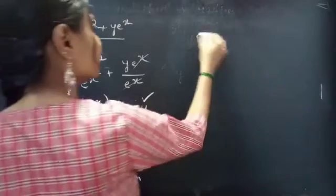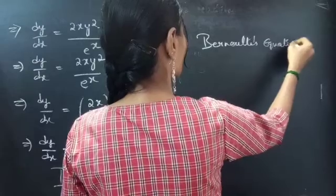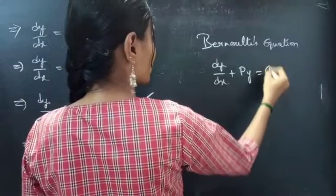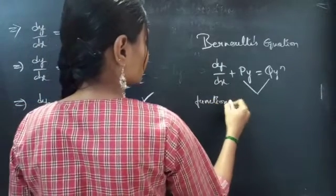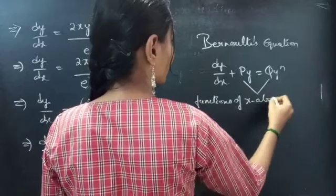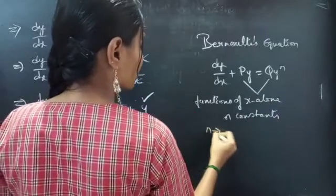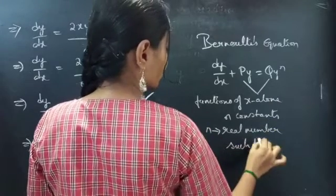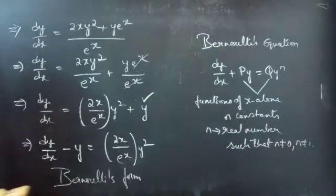We know that Bernoulli's equation is dy by dx plus P·y equals Q·y^n, where P and Q are either functions of x alone or constants, and n is a real number such that n ≠ 0 and n ≠ 1.